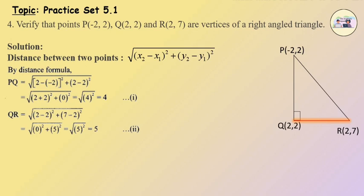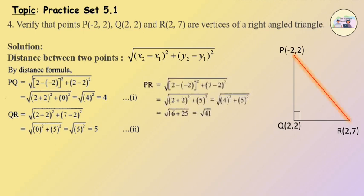Equation 1. QR is equal to under root (2 minus 2) the whole square plus (7 minus 2) the whole square, which is equal to under root 0 square plus 5 square, which is equal to under root 5 square, which gives us 5. Equation 2. PR is equal to under root (2 minus of minus 2) the whole square plus (7 minus 2) the whole square, which is equal to under root 4 square plus 5 square, which is equal to under root 16 plus 25, which is equal to under root 41. Now PR square is equal to root 41 the whole square, which is equal to 41. Equation 3.